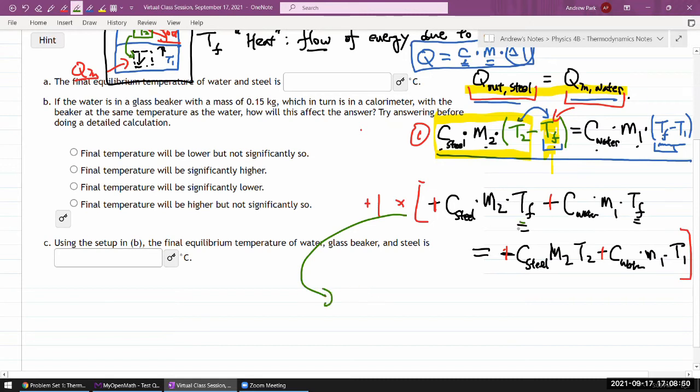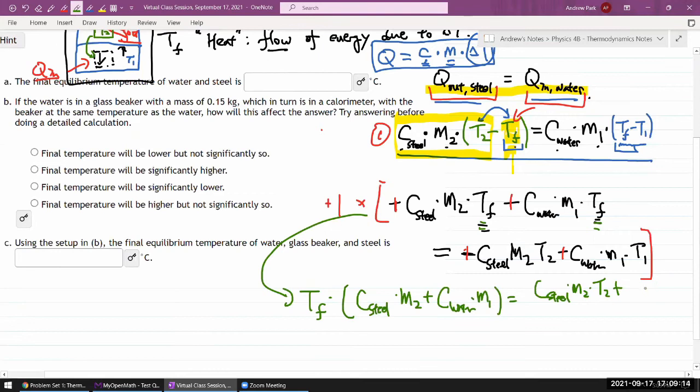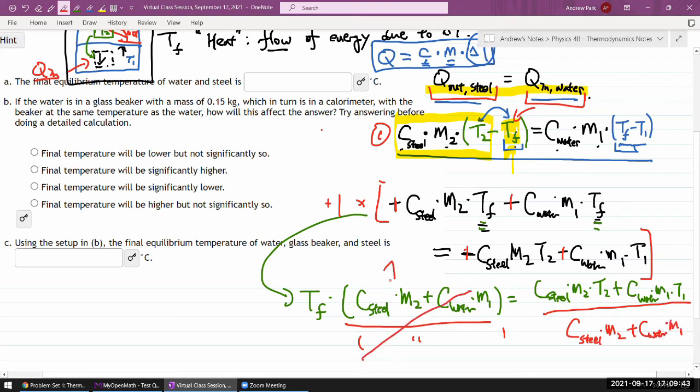So I have the product C M2 T2, move it over to right, so it gets a minus sign: C steel M2 T2. And on the right hand side I have C M1 minus T1: minus C water M1 times T1. I can multiply through the entire thing by minus one, and when I do that, I get to cancel out all these minus signs. Everything on the right hand side is a known quantity. So factoring out the left hand side: T final times (C steel times M2 plus C water times M1) equals C steel times M2 times T2 plus C water times M1 times T1. Divide through and plug in the numbers to get T final.